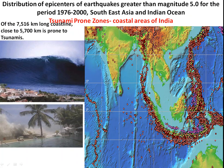Earthquakes in the sea cause tsunamis. There was an earthquake in the Sumatra region of Indonesia in 2004, which also struck parts of India, causing the tsunami that claimed many lives along India's eastern coast, especially in Tamil Nadu.